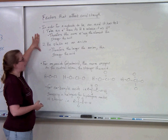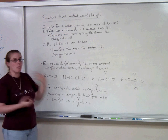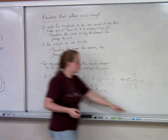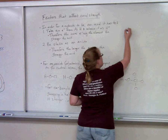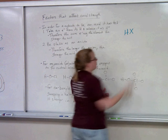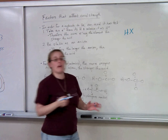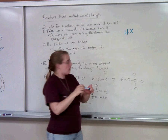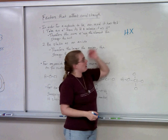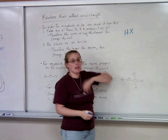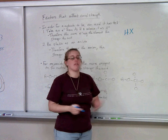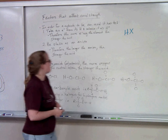First we're going to start with binary acids. What's a binary acid? That is just when you have hydrogen and one other atom — which could be fluorine, chlorine, anything off the periodic table. We're just going to call it X.